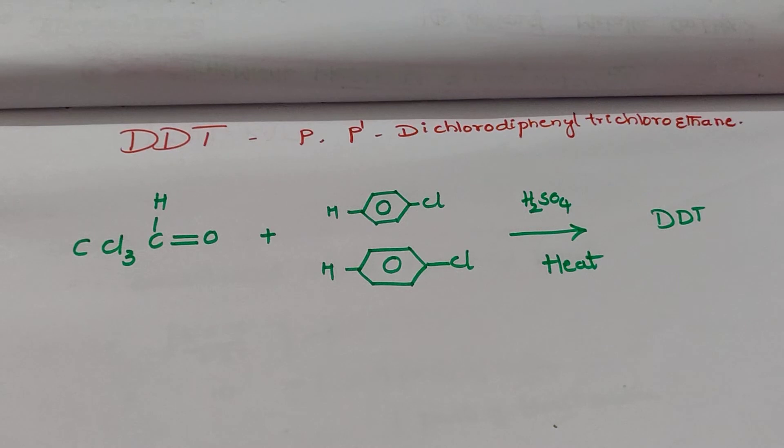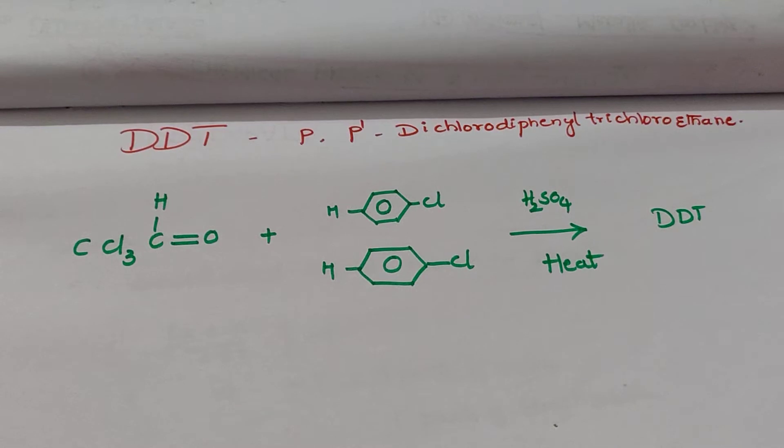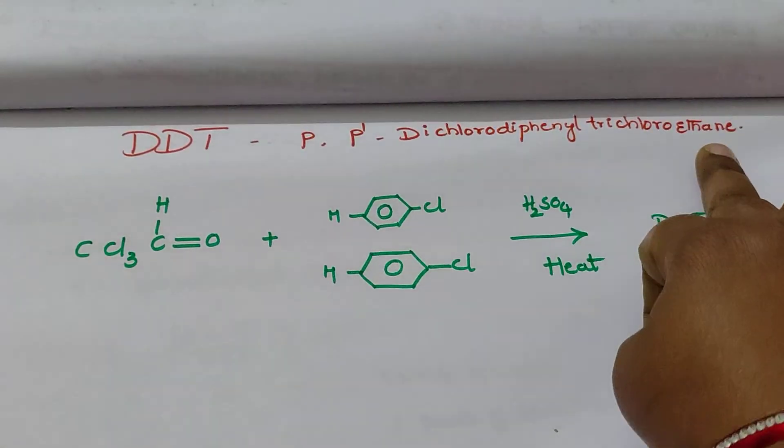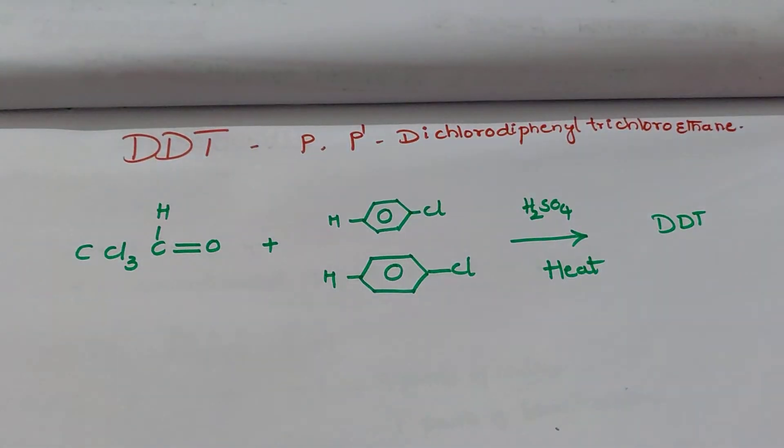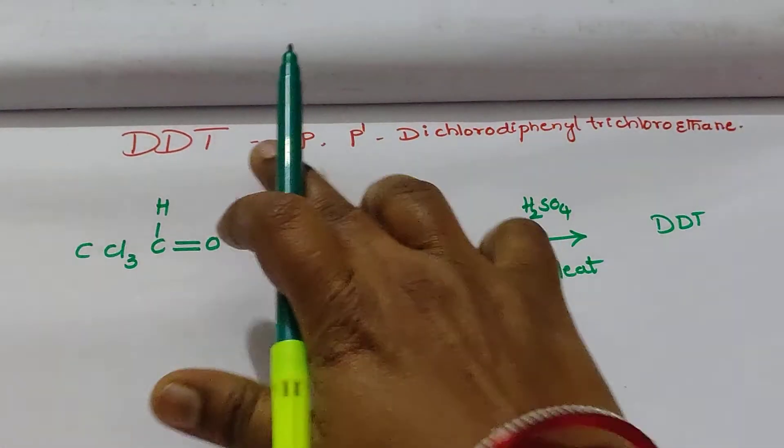The full form of DDT is dichloro-diphenyl-trichloroethane. Dichloro-diphenyl-trichloroethane is called DDT.